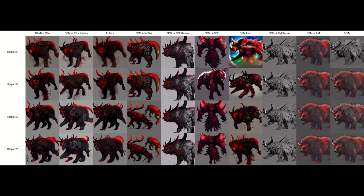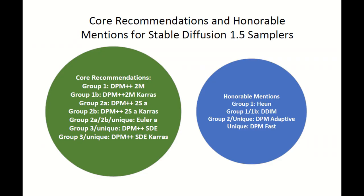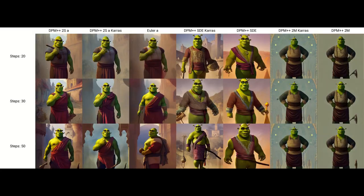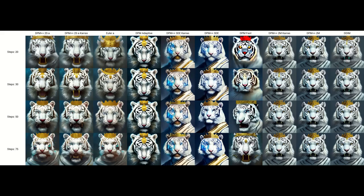And now, the moment you've been waiting for — the too-long-didn't-read. Here are the recommended core and expanded samplers to get the maximum variety with the fewest samples. From group 1: DPM++2M. From group 1b: DPM++2M Karras. Group 2a: DPM++2S A. Group 2b: DPM++2S A Karras. In addition, the four optional or expanded samplers I recommend are DPM Adaptive, DPM Fast, Heun, and DDIM.